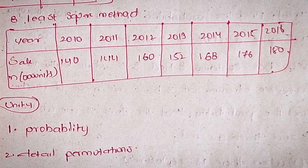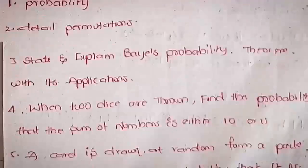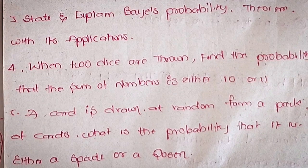Unit 4: Set Theory — important questions. First: Probability. Second: Detailed permutations. Third: State and explain Bayes' probability theorem with its applications.